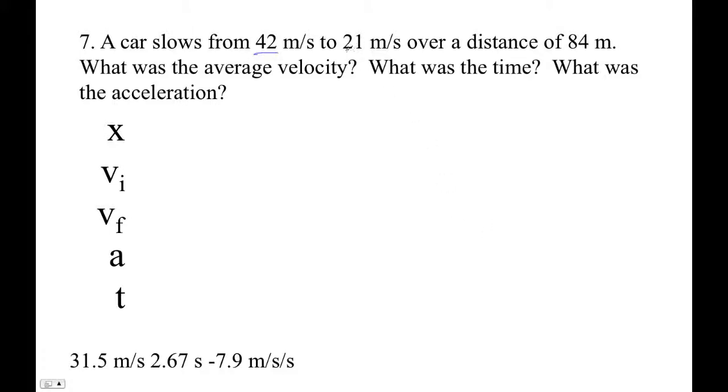Okay, a car goes from this speed to this speed in that distance. So this is our initial, our final is 21. These are meters per second. 84 is our distance.